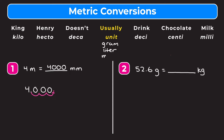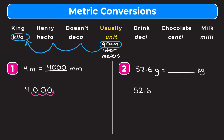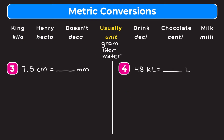For number two, we have 52.6 grams equal to how many kilograms. We're going from our unit of grams all the way to kilograms, so we go one, two, three units to the left. Rewriting 52.6 and moving the decimal point three places to the left — one, two, three — we fill in with a zero. So 52.6 grams is equal to 0.0526 kilograms.